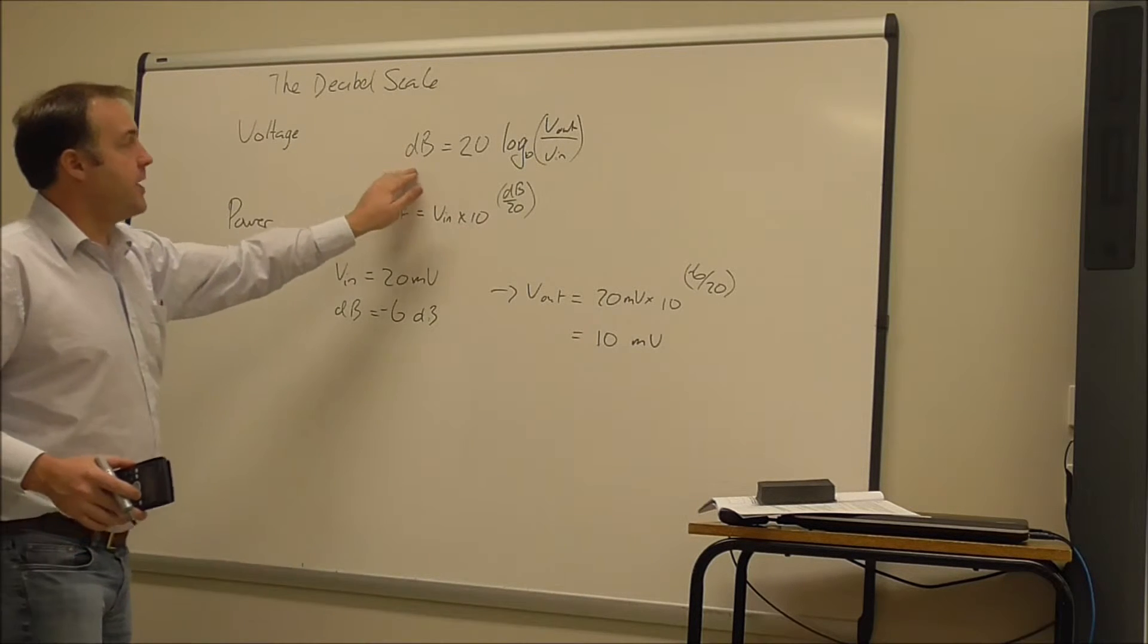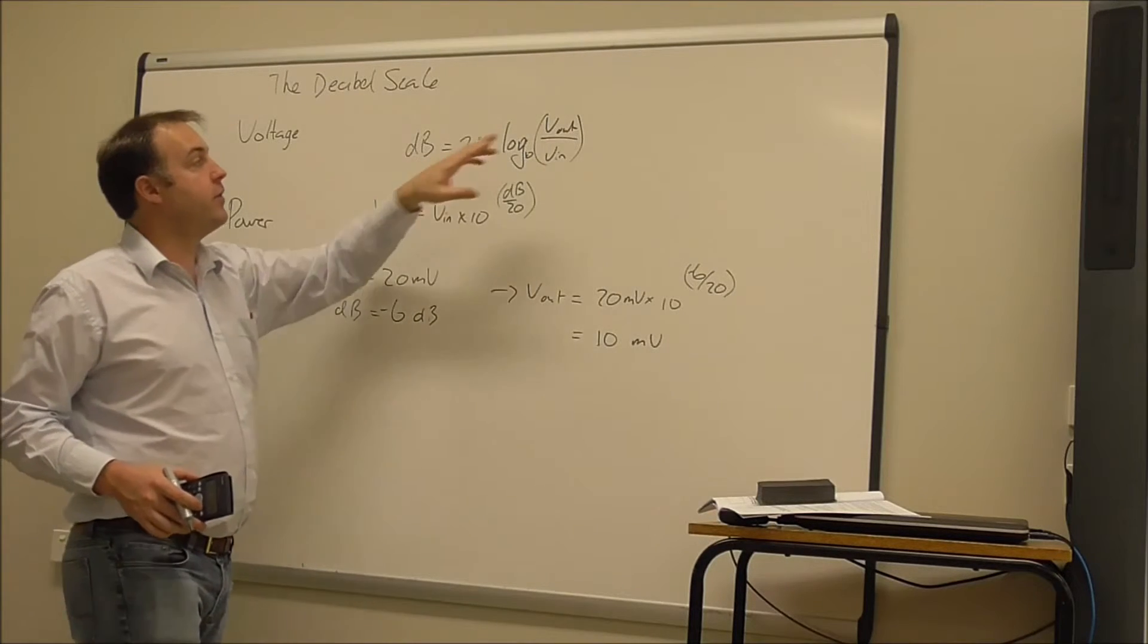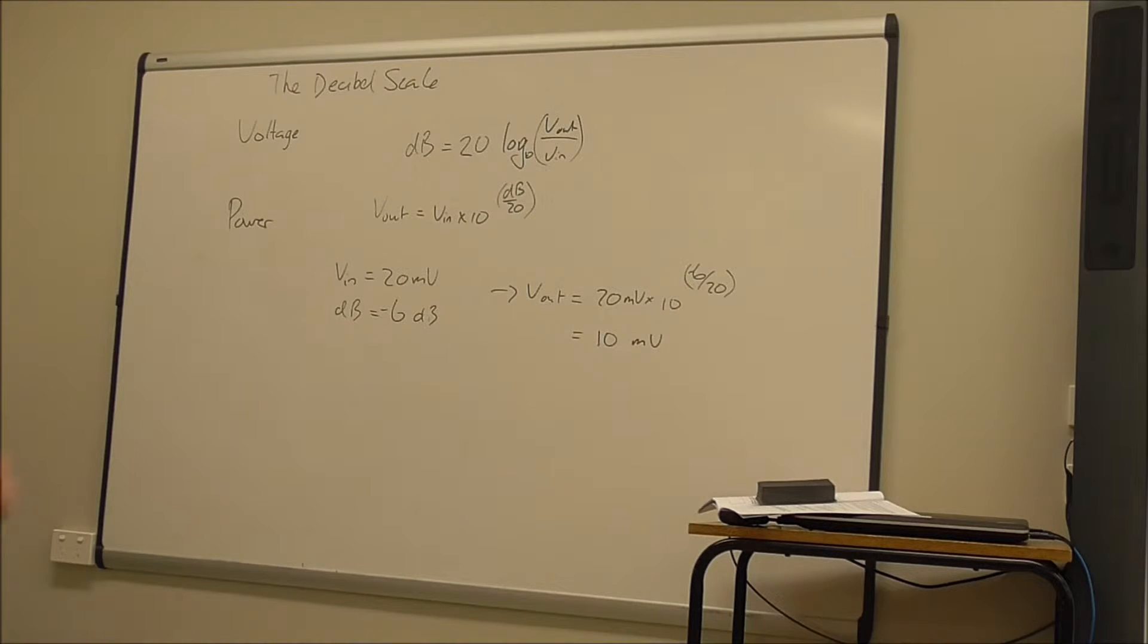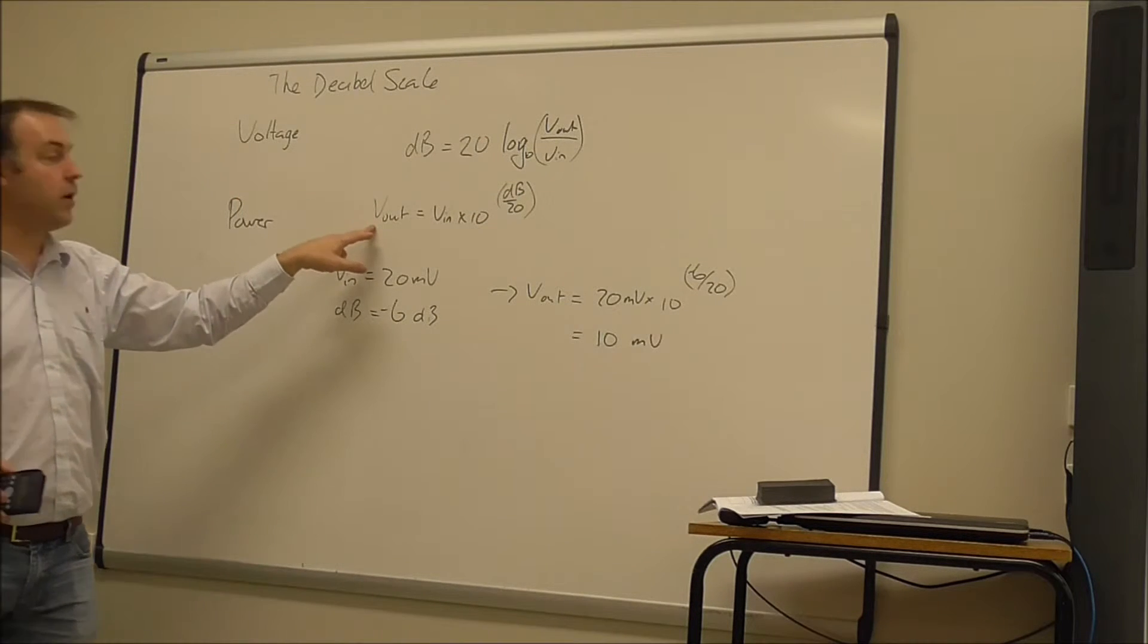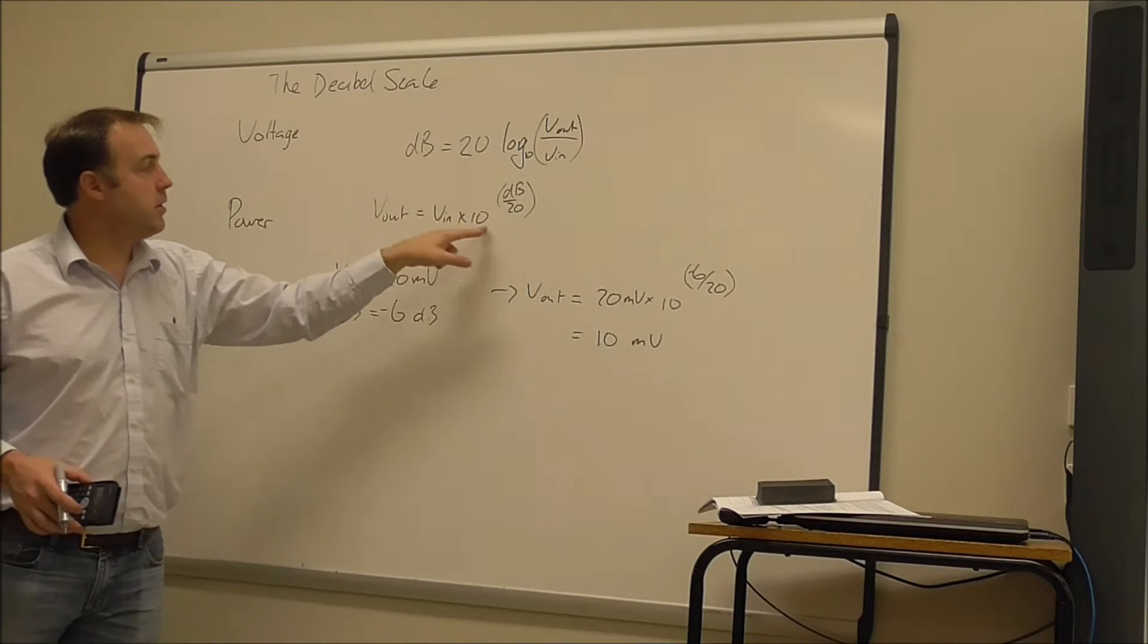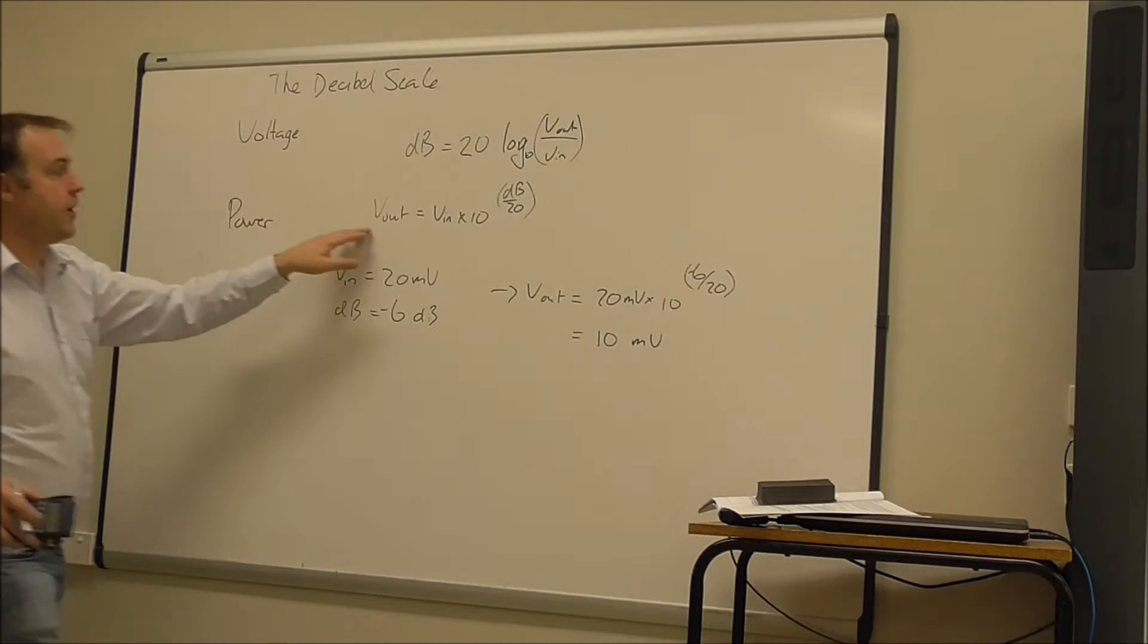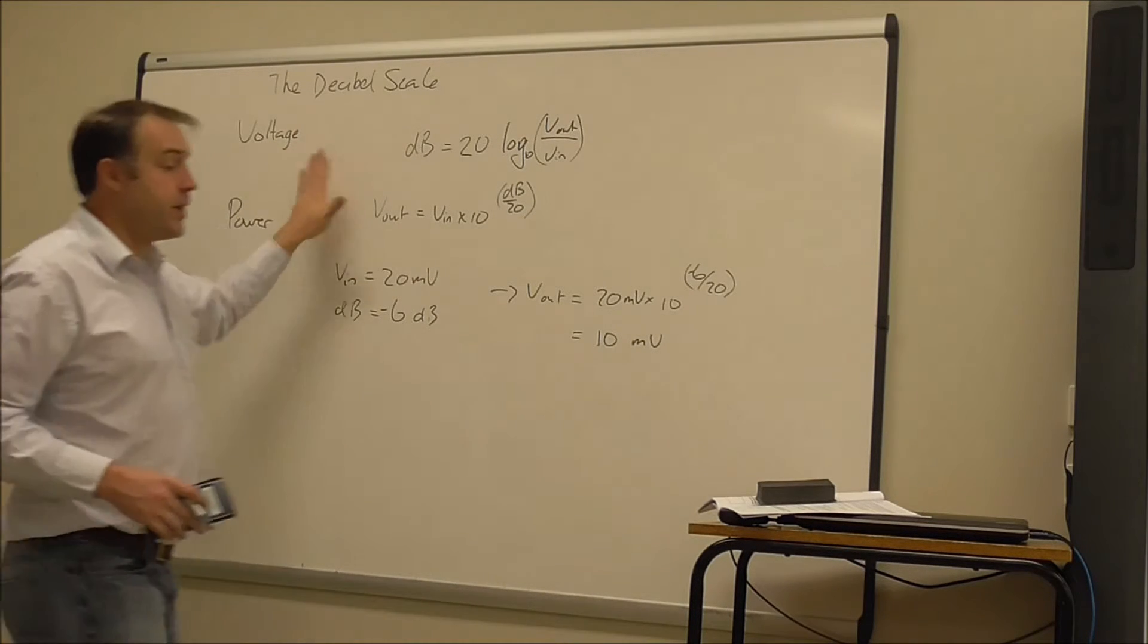So that's the formula for calculating the gain of the decibels given the voltages. So it's 20 times log of the ratio of the voltages. To transpose that to get a voltage I would need to use this formula here. So that's the transpose equation for that. So that's the voltage.